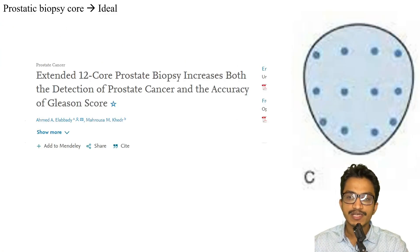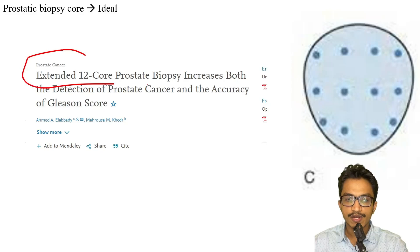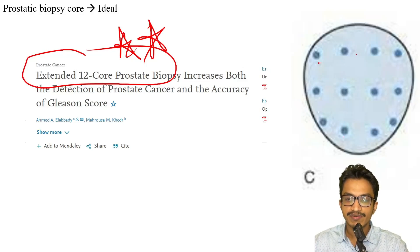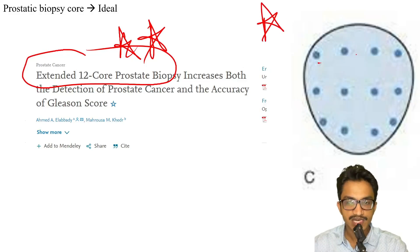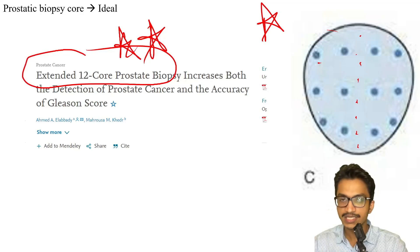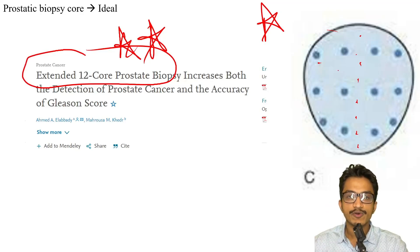For prostate biopsy core: if this image is given, remember that a 12-core biopsy is the accurate and preferred one — six cores on each side. There is no core taken in the midline. So the answer should be 12-core biopsy as the ideal prostate biopsy.